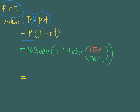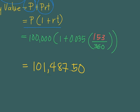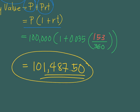Once you compute for this value, you will be able to get the exact maturity value of 100,000 after 153 days. This amount is 101,487.50. So from 100,000, it is now 101,487.50. From 100,000, it grew by this amount — this amount is the interest. Because the maturity value is just the principal amount plus the interest, the interest gained is 1,487.50.